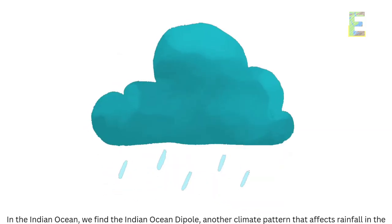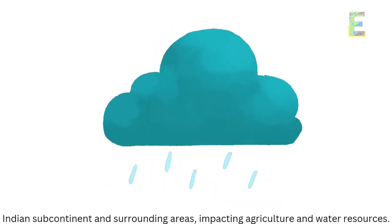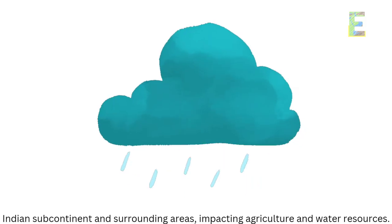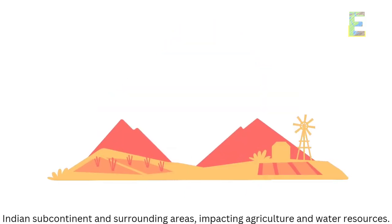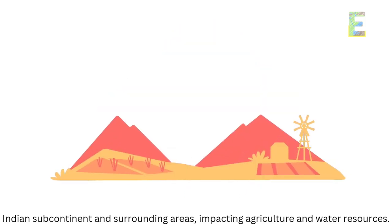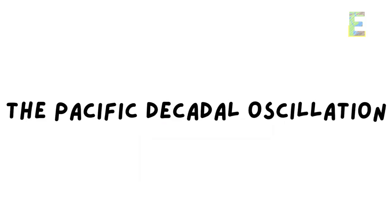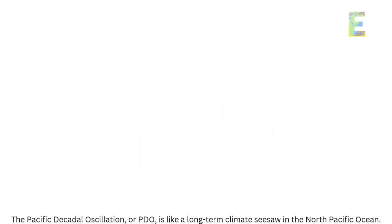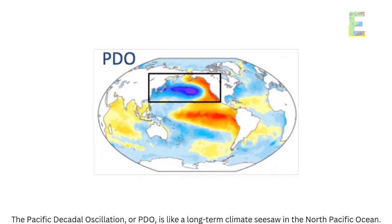The Indian Ocean Dipole — in the Indian Ocean, we find the Indian Ocean Dipole, another climate pattern that affects rainfall in the Indian subcontinent and surrounding areas, impacting agriculture and water resources.